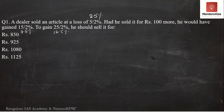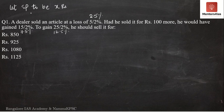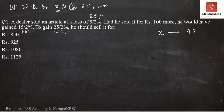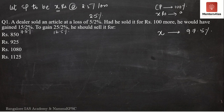Let me assume the selling price to be X rupees such that X rupees is at the rate of 2.5 percent loss. X rupees is 97.5 percent with respect to the cost price. If the cost price is 100 percent, then X at a loss of 2.5 percent will be 97.5 percent — that is 100 minus 2.5.